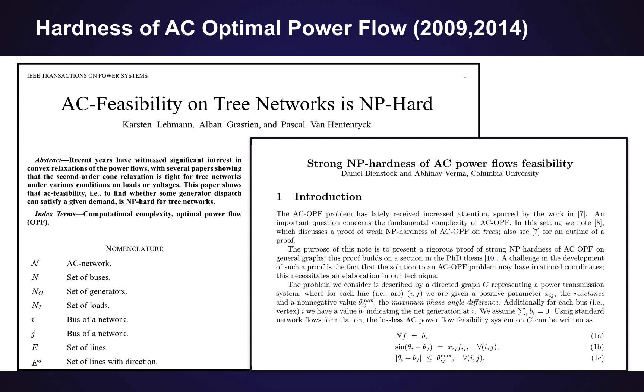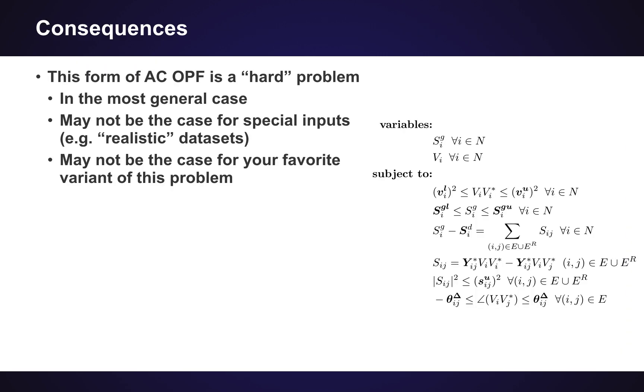So ACOPF might be a hard problem, it might be an easy problem, but you need to do a proof either way to claim that it's hard or it's easy. The good news is a number of really smart people have done a significant amount of work to show cases when the ACOPF problem is hard. One of these papers talks about if you're just in a tree network and all you're trying to decide is does there exist a solution to this particular AC optimal power flow problem in a tree network, then it's NP-hard to decide that. There's other papers which look at mesh networks and show that there's a strong NP-hardness within those particular networks.